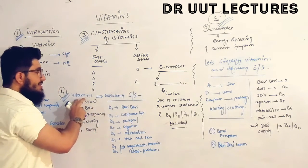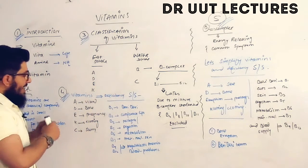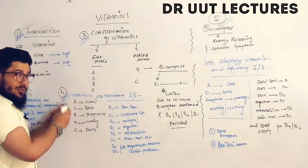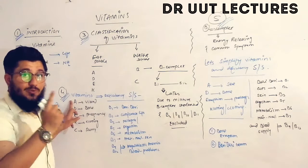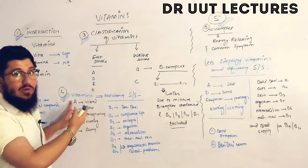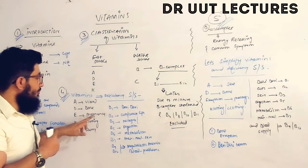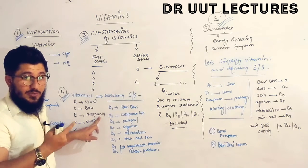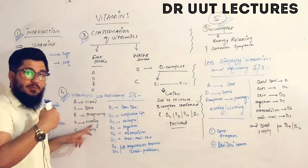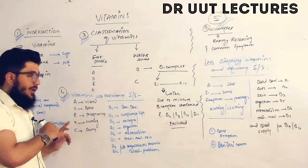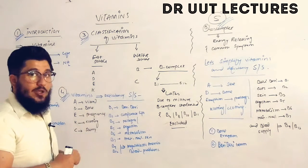Now let's look at vitamins and their deficiency signs and symptoms. Vitamin A deficiency causes visual problems such as night blindness. Vitamin D deficiency leads to bone problems. Vitamin E deficiency is associated with problems during pregnancy. Vitamin K deficiency causes clotting problems. Vitamin C deficiency causes scurvy.